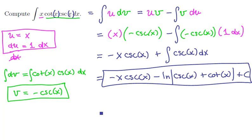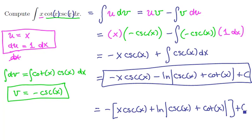It's also worth noting that both of these terms in front are negative, so you could factor out a negative one and have x times the cosecant of x plus the natural logarithm of the absolute value of the cosecant of x plus the cotangent of x. This whole expression added to a c. Either one of those is legit.